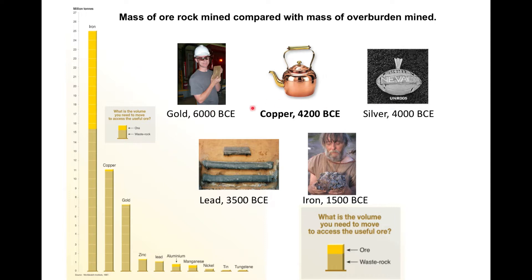Here again are the metals of antiquity: gold, copper, silver, iron, and lead. The histogram shows the amount of ore-grade rock relative to waste rock, where the waste rock is the volume you need to move to access the useful ore—this is the overburden. For copper, a significant amount of overburden must be removed globally to process ore-grade rock, and the same applies for iron, gold, zinc, and other metals. All of that is stored on site in mountains of waste rock.